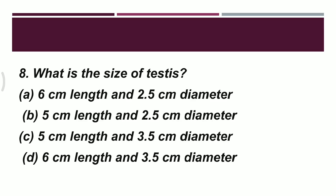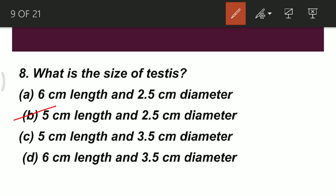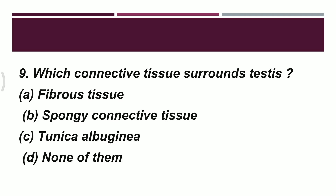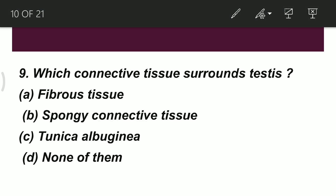Question 9: which connective tissue surrounds the testes? Option A: fibrous tissue. Option B: spongy connective tissue. Option C: tunica albuginea. Option D: none of them. The correct option is C — tunica albuginea — which is the connective tissue that surrounds and covers the testes.